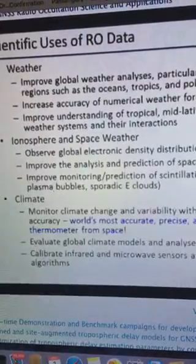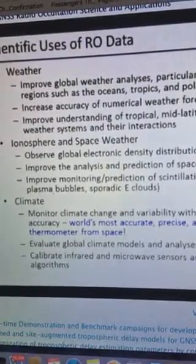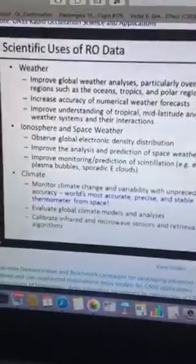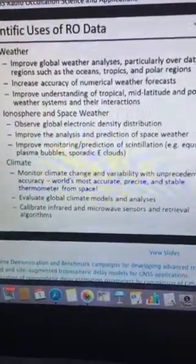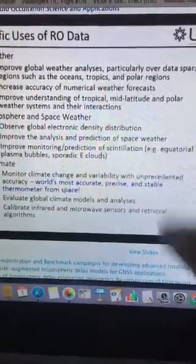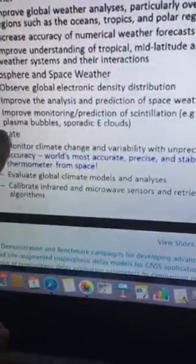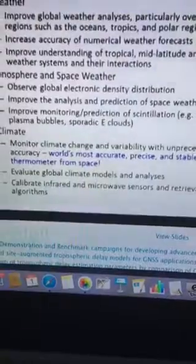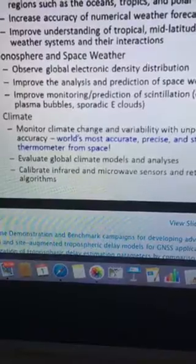I mentioned already some of the scientific uses, but I think one of the big ones is obviously weather. All the major weather centers in the world now assimilate radio occultation data and use that in their forecasts. It's particularly useful in the southern hemisphere and over the oceans, which is not dissimilar to what we see with geodetic data from GNSS, because it's hard to put sensors in the ocean and in remote areas. Ionosphere and space weather, that's a whole other area. And as I was just mentioning, climate. I think a lot of the eminent scientists in this field agree that radio occultation provides the best, accurate, precise, and stable thermometer from space.